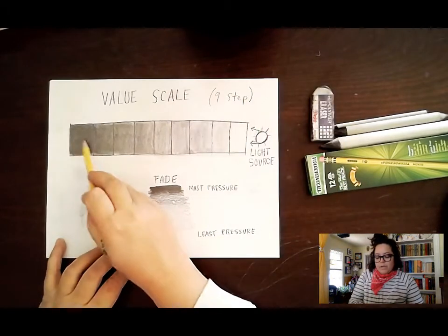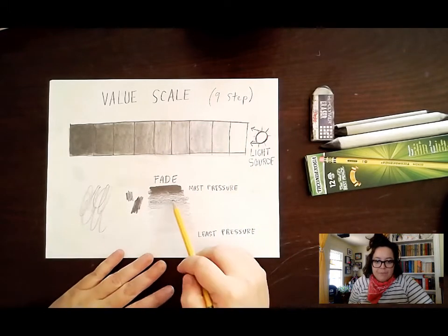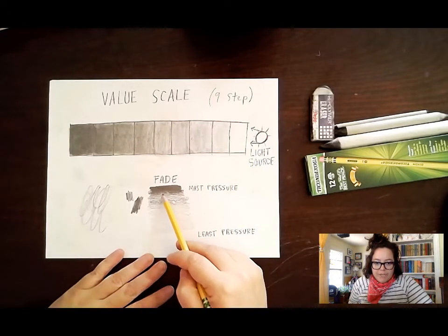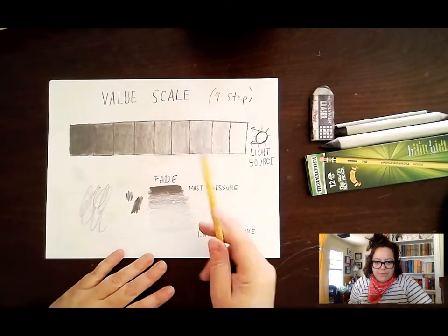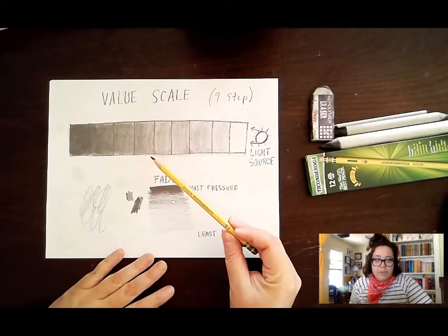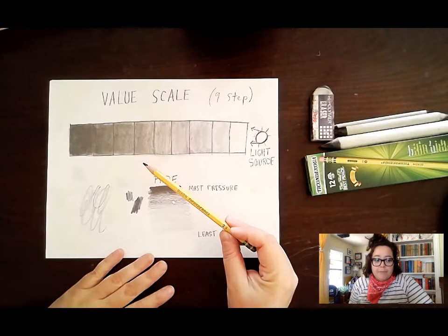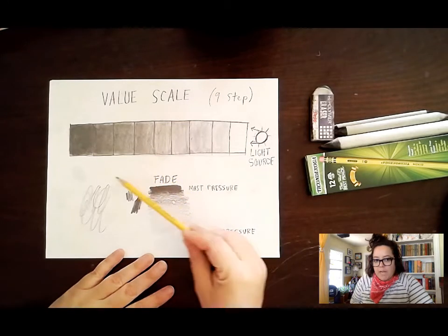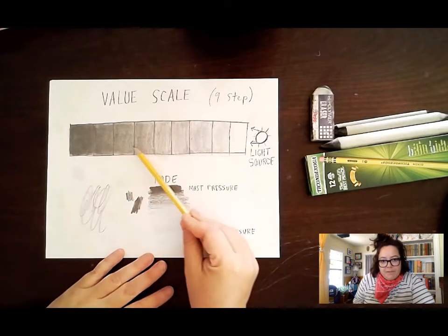So each square is a step. Essentially what we're going to be working on is trying to use one pencil, a 2B pencil or a colored pencil, to create a step-by-step fade.